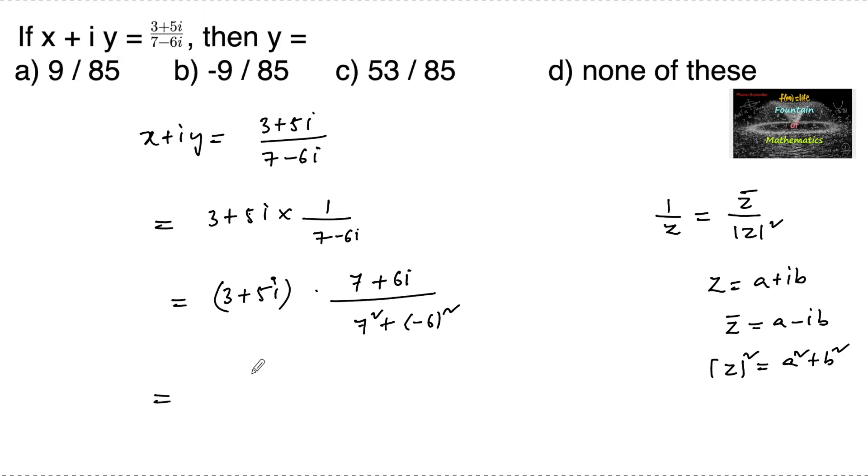This equals (3 + 5i)(7 + 6i) over 49 + 36, which equals (3 + 5i)(7 + 6i)/85.